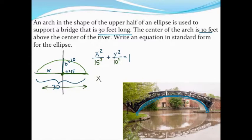From here, let's clean this up a little bit and simplify. X squared over 225, if I square 15, plus y squared over 100 equals 1 would be a way to describe the equation of this upper half of an ellipse that represents the bridge.